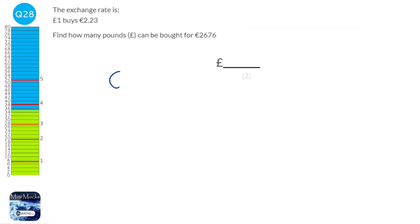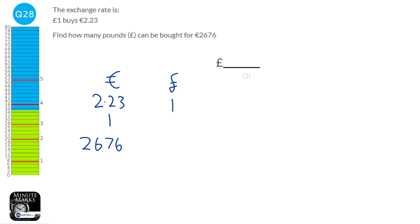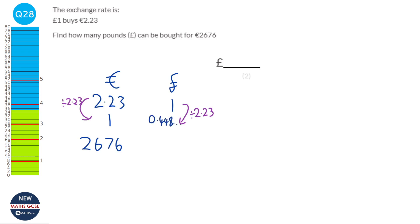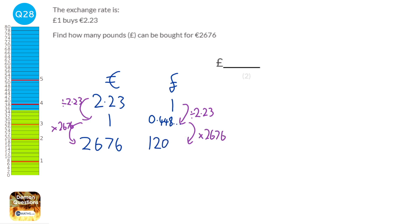We've got euros and pounds, and we're told that 1 pound is 2.23 euros. We're trying to find what 2,676 euros is in pounds. To get from 2.23 to 1 we divide by 2.23 on both sides, giving 0.448. Then to get from 1 to 2,676 we multiply by 2,676 on both sides. When we do that we get 1,200 pounds. So 2,676 euros is 1,200 pounds.